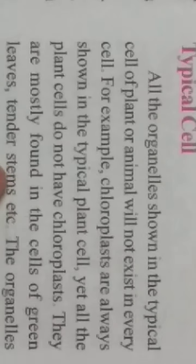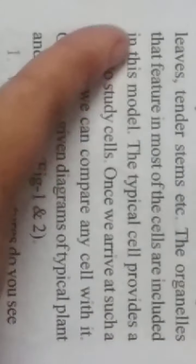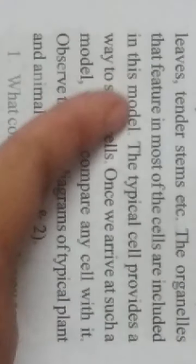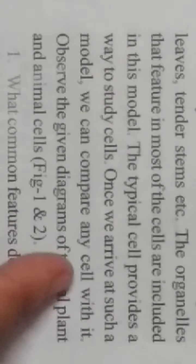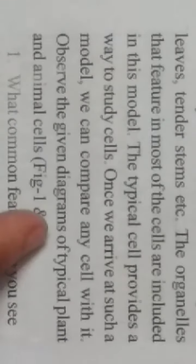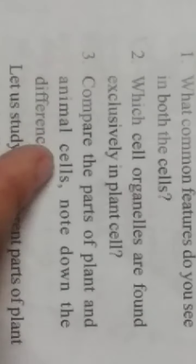Chloroplasts are mostly found in cells of green leaves, slender stems, etc. The organelles that feature in most cells are included in this model. The typical cell provides a way to study cells; once we arrive at such a model, we can compare any cell with it. Observe the given diagrams of typical plant and animal cells in Figures 1 and 2. What common features do you see in both cells? Which organelles are found exclusively in plant cells? Compare the parts of plant and animal cells and note down the differences.